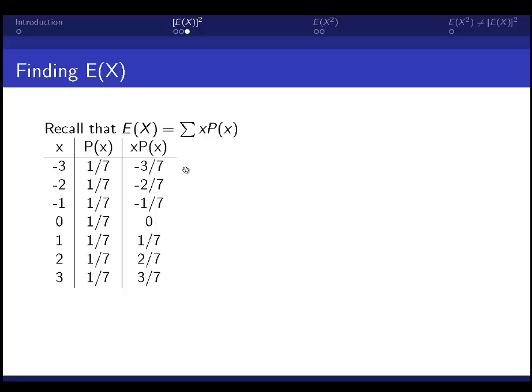Now let's find the expected value. We know that the expected value of x is the sum of multiplying x times its probability. So here I've made a new column, x times its probability.